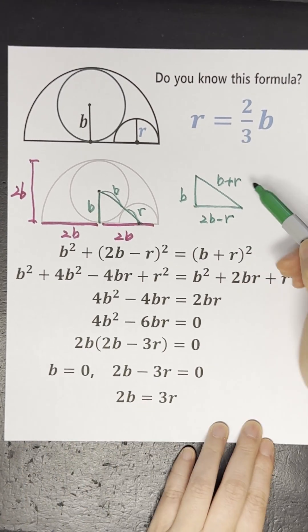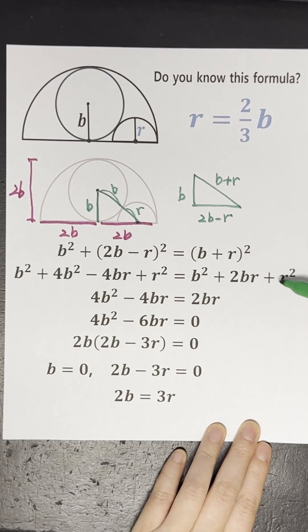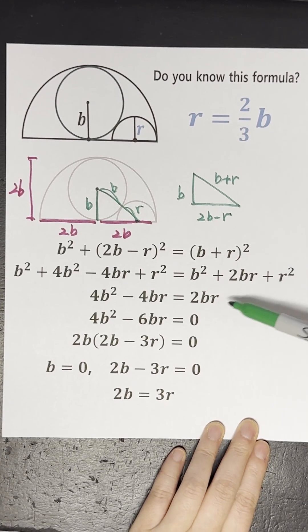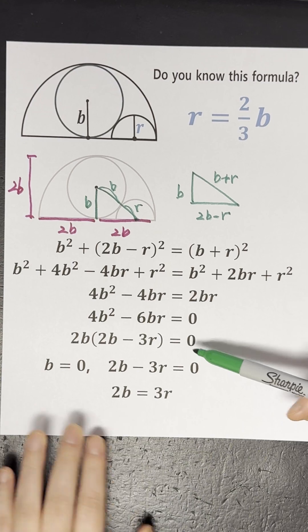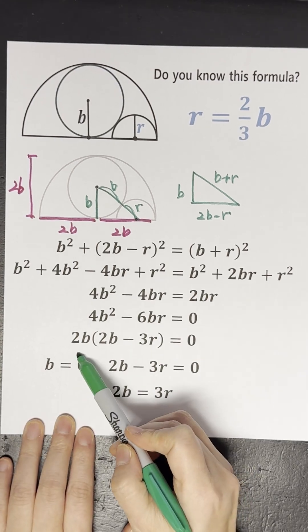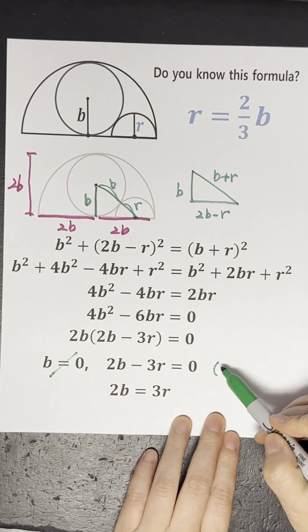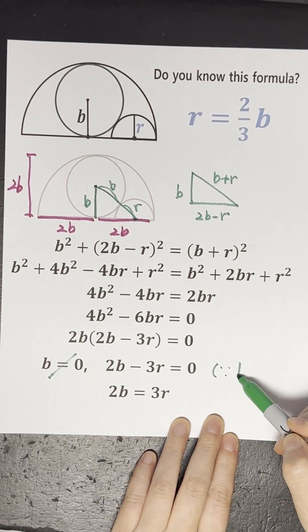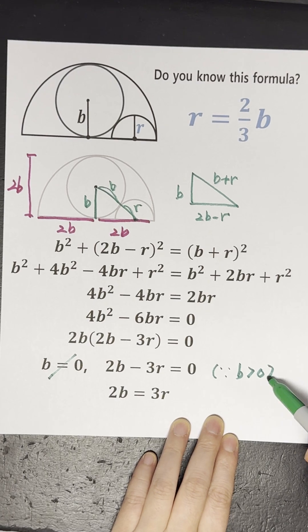Then, we can use the Pythagorean theorem to find these two possible answers. However, B cannot be 0, since the radius must have a positive value.